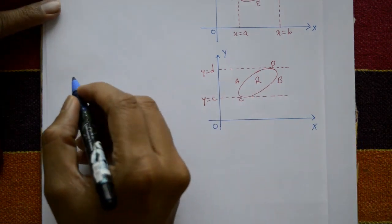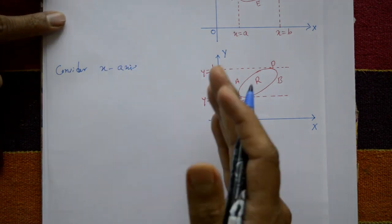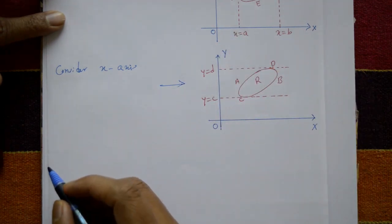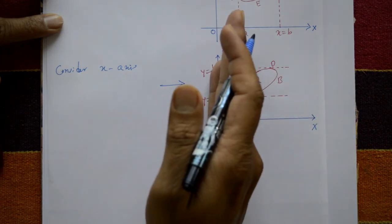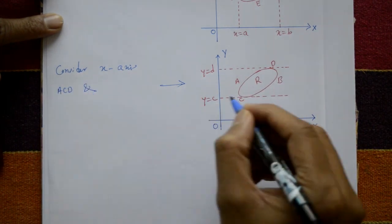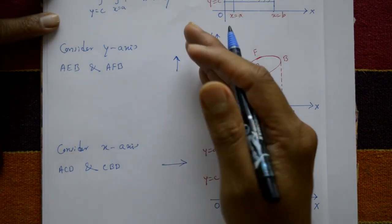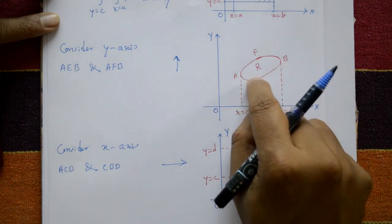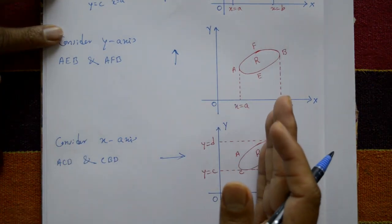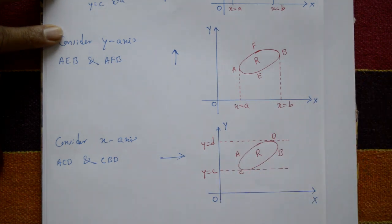Same diagram but now y goes from c to d. When you consider the x-axis, it always goes left to right. The left curve is the lower limit cad, and the right curve is the upper limit cbd. So for the y-axis: bottom to top, lower limit aeb then upper limit afb; for the x-axis: left to right, lower limit cad and upper limit cbd.